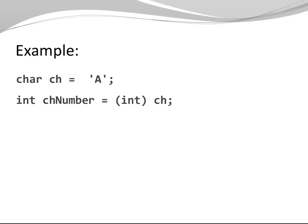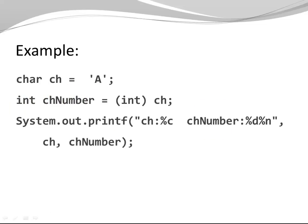Now, if I also have an integer called chNumber, this is the corresponding number to my character. I could assign it my character cast to an integer, which means take my A, interpret it as an integer, and save that in my integer variable chNumber.